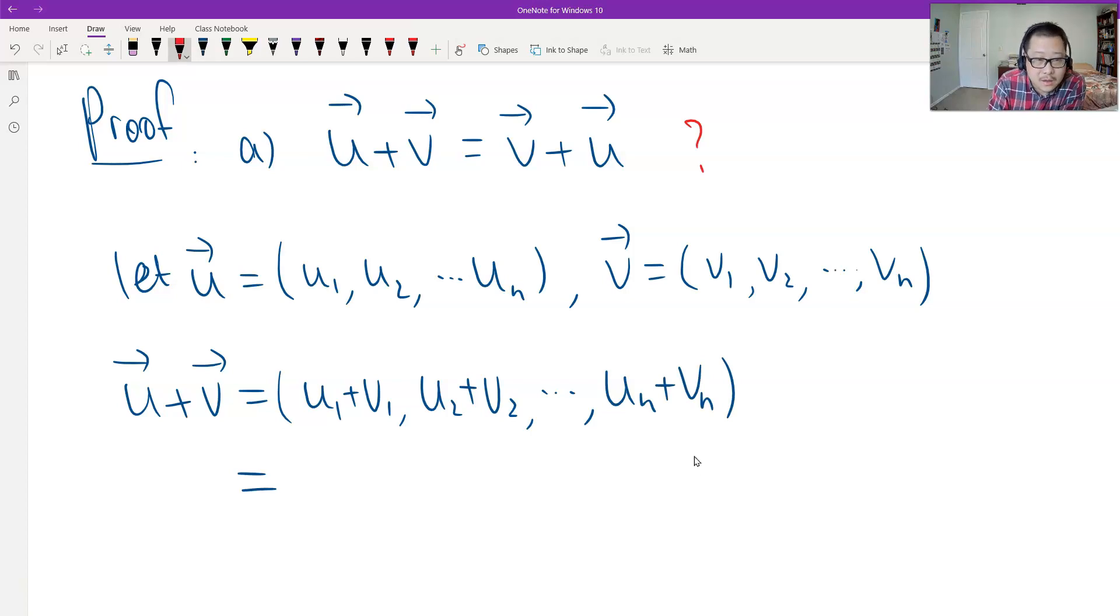And then see, each term we can switch the order. Because that's commutative for scalar numbers, definitely. So we have (v1 + u1, v2 + u2, ..., vn + un).